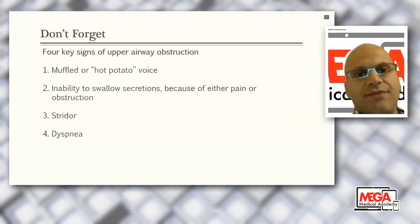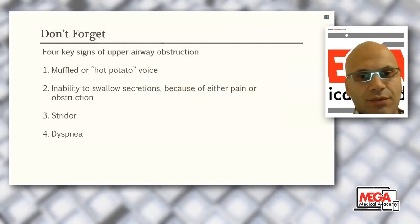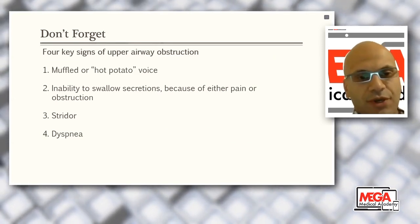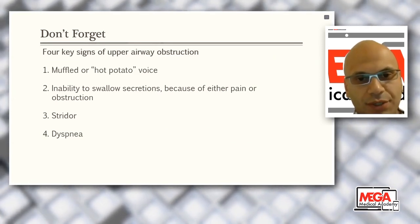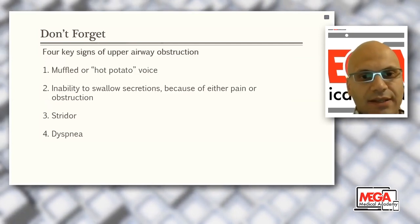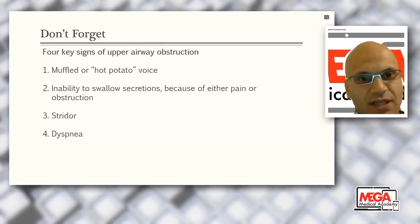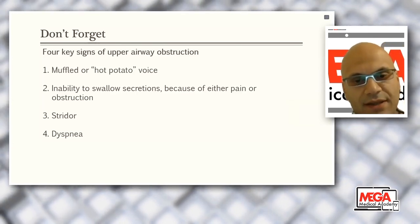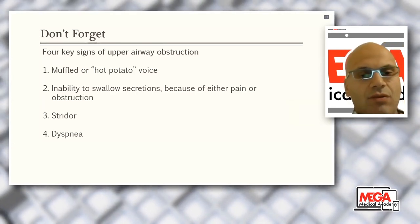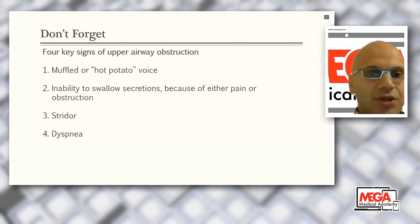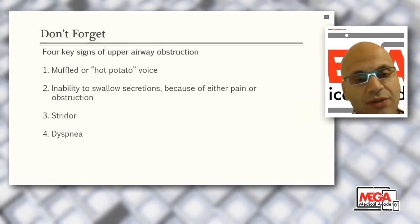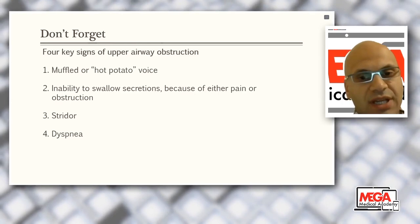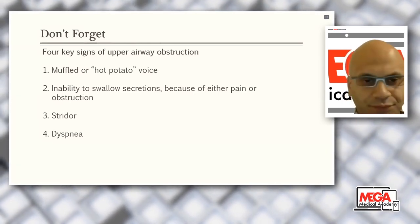There are four key signs of upper airway obstruction. First: muffled or hot potato voice. Second: inability to swallow secretions. Third: stridor. Fourth: dyspnea. The first two do not necessarily indicate complete or near-complete obstruction. However, if the patient has stridor, be sure that more than 50% of the airway is already obstructed — it is a serious condition.